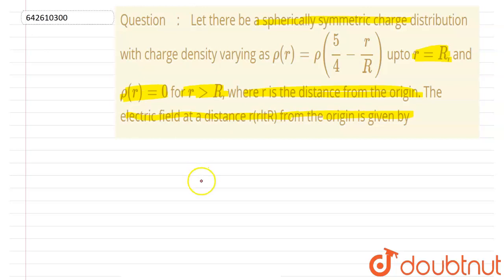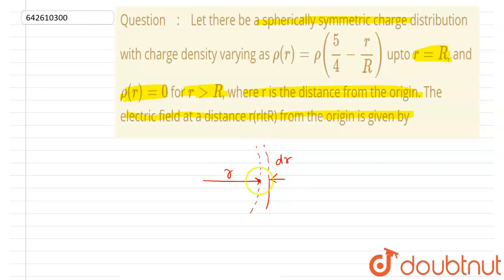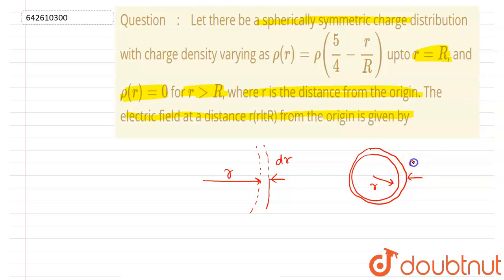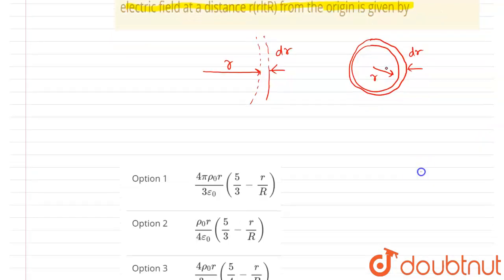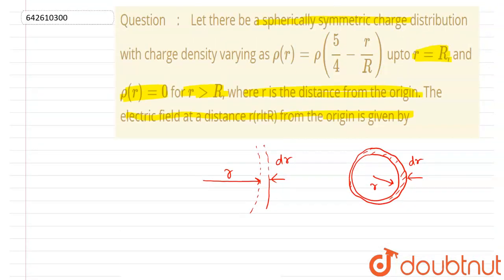At a distance r from the center, take a small spherical shell of thickness dr. So this shell has a radius r and a thickness dr. For this thin shell, we can assume the charge density to be constant, equal to ρ(r) at that radius.